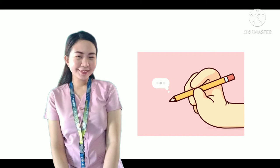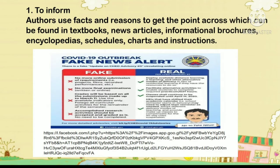One among the author's purposes is to inform. This is used to give information or describe something. Authors use facts and reasons to get the point across, which can be found in textbooks, news articles, informational brochures, encyclopedias, schedules, charts, and instructions.